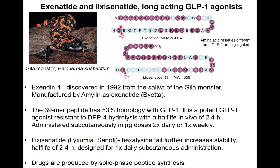The differences in the Gila monster peptide contribute to greater stability. At the position cleaved by DPP-4, human GLP-1 has alanine, which is changed to glycine in exenatide, increasing stability. Various other changes in the rest of the sequence also contribute to a longer lifetime. Pharmacologically it has the same effect — it is a potent GLP-1 agonist — but the half-life has now increased to two hours compared to two minutes.